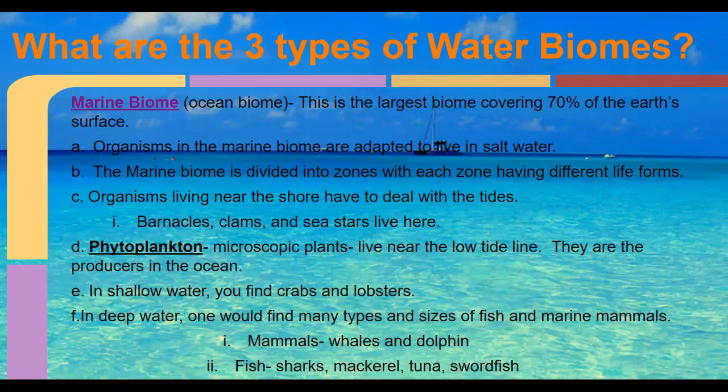The marine biome is broken into different ecosystems based on depth — you have the intertidal zone, the deep ocean, the benthic zone — and it all depends on the amount of light reaching each one and whether you have tides. Organisms along the coast deal with being in and out of water, like barnacles, clams, and sea stars in the intertidal zone. The number one producer of the ocean is phytoplankton, which live within the first 10 to 20 feet of the ocean and are photosynthetic. They're eaten by zooplankton, which are animal-like plankton, and then fish eat the zooplankton.